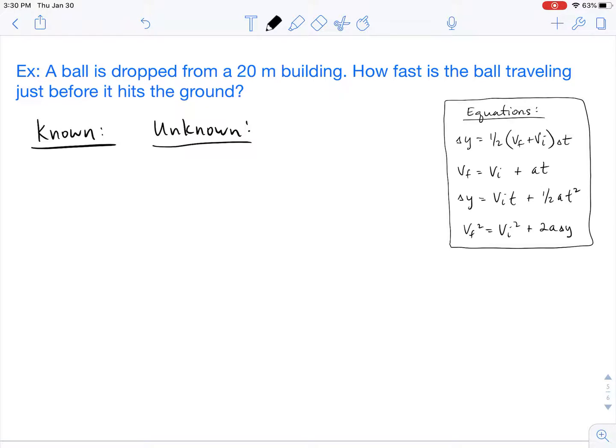So our problem for today is a ball is dropped from a 20-meter building. How fast is the ball traveling just before it hits the ground? So as always, we should start with our known and our unknowns.